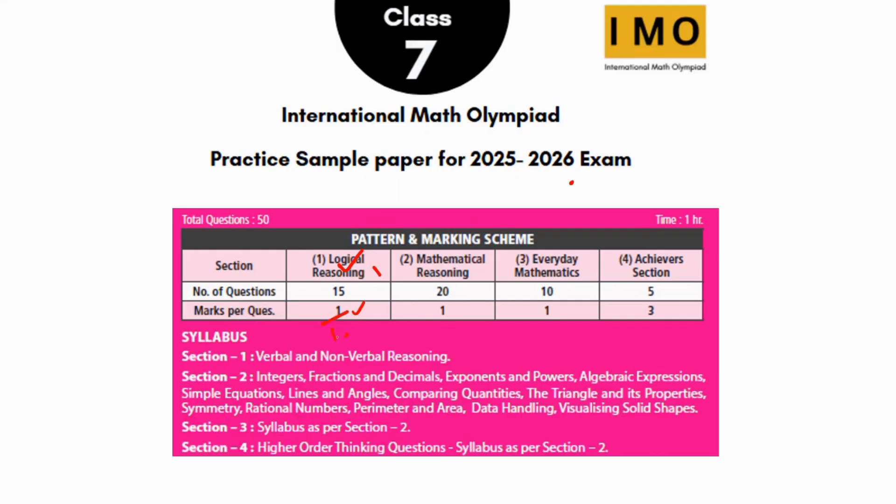The first section is logical reasoning with 15 questions, one mark each, totaling 15 marks. Topics include verbal and non-verbal reasoning, diagrams, directions, and ranking. Next is mathematical reasoning with 20 questions, one mark each for 20 marks. Then everyday mathematics with 10 questions for 10 marks. The last section is achievers section with five questions at three marks each, making 15 marks. The topics are the same for the last three sections, but the difficulty level is a step above in the achievers section.